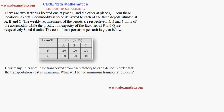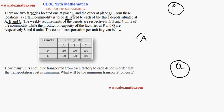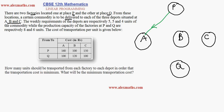In this video on linear programming, I am going to teach you the transportation problem. There are two factories located at P and Q. From these locations, a certain commodity is to be delivered to each of the three depots A, B, and C. The commodities are transferred from factory P to A, from Q to A, from P to B, from Q to B, from P to C, and from Q to C.